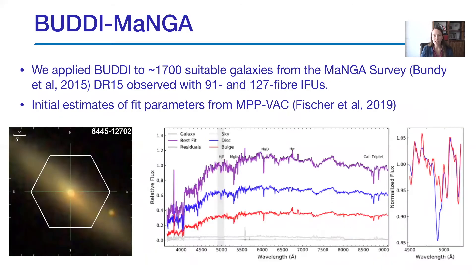I've used BUDDI for quite a few studies over the years, extending from extended stellar halos right down to nuclear star clusters. But I've always worked with very small samples, and for years I've wanted to use BUDDI on a statistical sample to really understand what's happening within bulges and disks. This is where BUDDI-MaNGA comes in. I've been working to automate BUDDI to apply it to around 1,700 suitable galaxies from the latest data release of the MaNGA survey — galaxies observed with 91 and 127 fibre IFUs that have successful fits from the MPP value-added catalogue. We use the fit parameters from this catalogue as the initial parameters for the BUDDI fits.